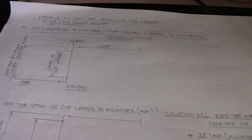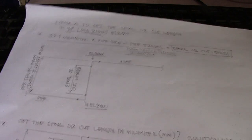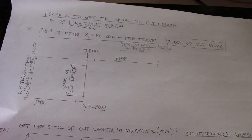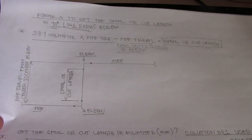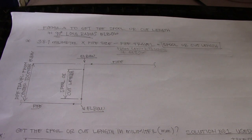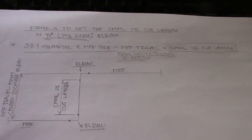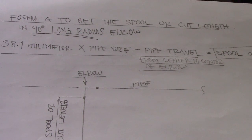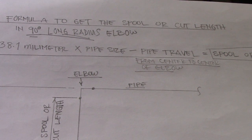So now let's apply the formula. This is our solution for how to get a spool. This is the formula to get a spool or cut length in a 90 degrees long radius elbow.